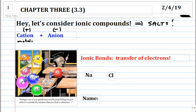You should get the ion sheet that I gave you on Friday out right now. So, where do we get cations from? Atoms make ions, and if it's a metal, they make cations. We also have one polyatomic ion that is a cation: the ammonium ion.